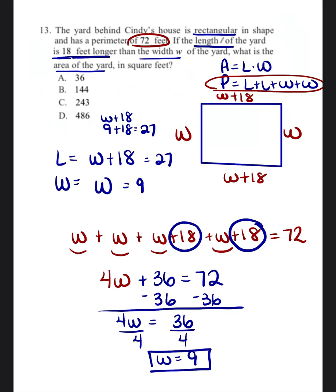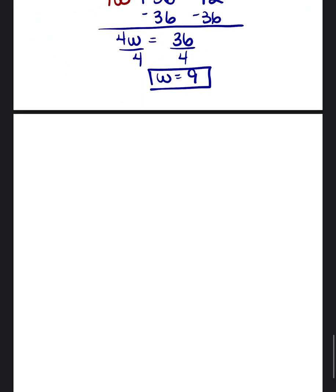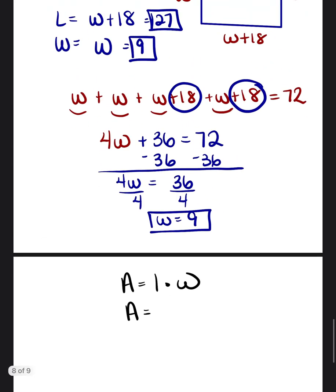Okay, so now we know what the length is, 27, and the width is 9. And so they're asking us again, what is the area of the yard? Area is equal to length times the width. So we're literally just going to do area equals length times the width. Area is going to be equal to 27 times 9.